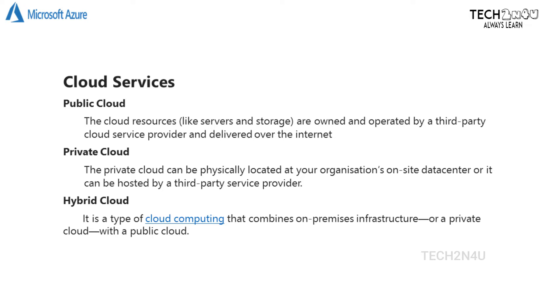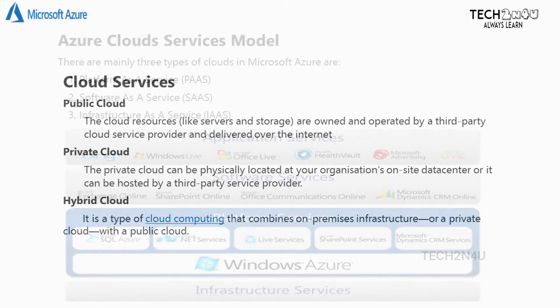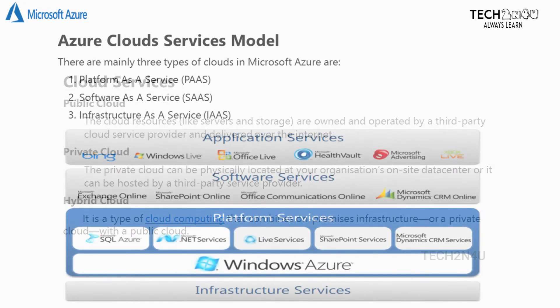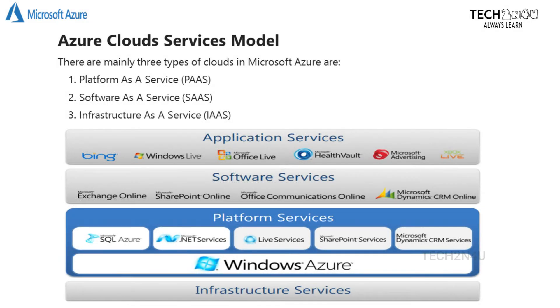Hybrid cloud is a type of cloud computing that combines on-premises infrastructure or a private cloud with a public cloud. Azure cloud services model: there are mainly three types of cloud services in Microsoft Azure.